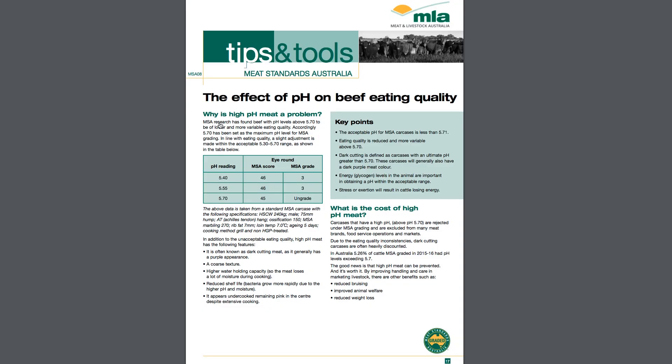As for MSA licensed processors, they have a responsibility to teach livestock operatives about MSA eating quality principles, as well as train them on how to monitor the rate of pH and temperature decline in the carcasses once the animal has been slaughtered. Management of pH decline at the processing plant is important to ensure meat toughening does not occur through heat or cold shortening.